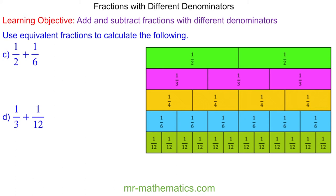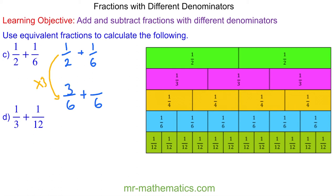For question C, we're going to use a common denominator of six, because six is the lowest common multiple of two and six. We need to multiply the half by three, because two times three is six, so one times three is three. Adding one sixth gives a total of four sixths, and we can simplify by dividing both the numerator and denominator by two, giving us two thirds.